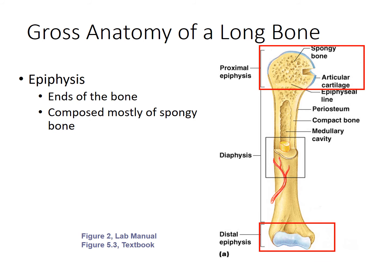Spongy bone is more compressible and more appropriate for the end of the bone where it is going to form a joint with another bone.